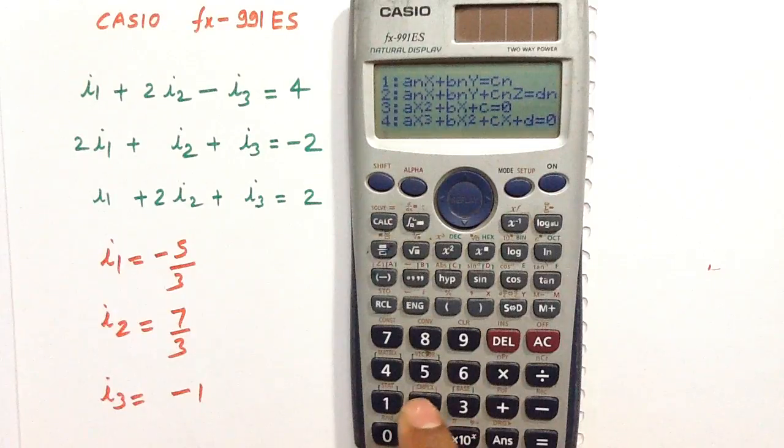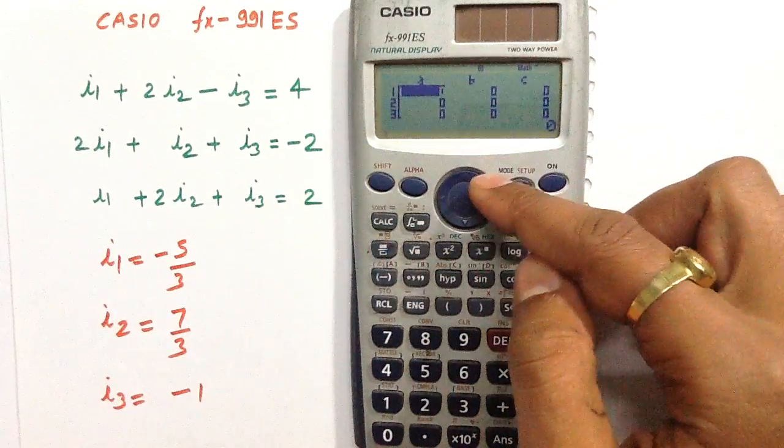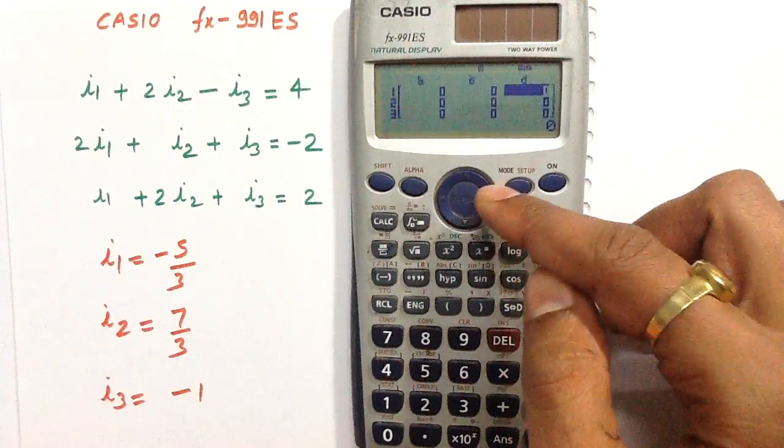So press this button 2. There is column A, column B, column C, and column D.